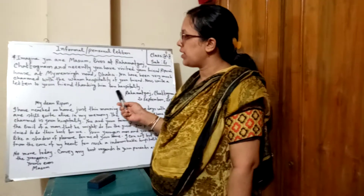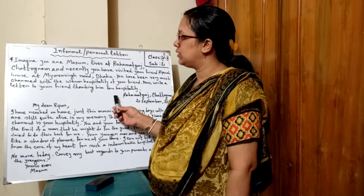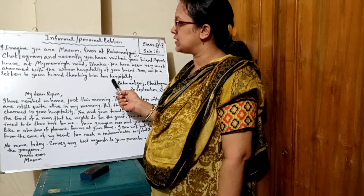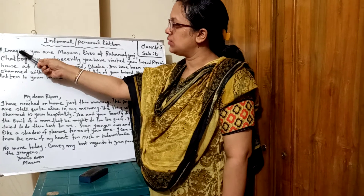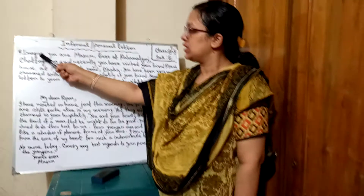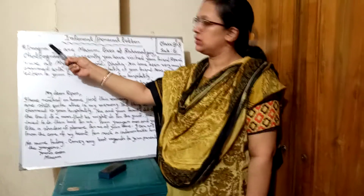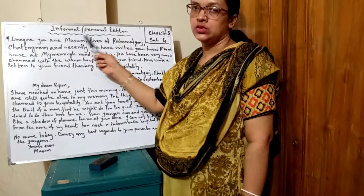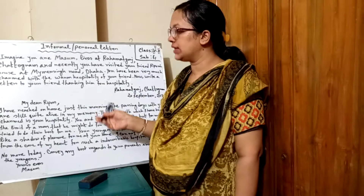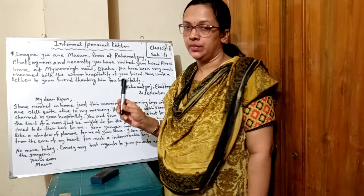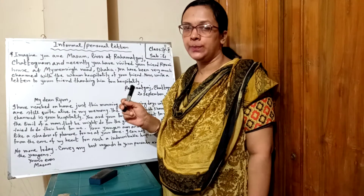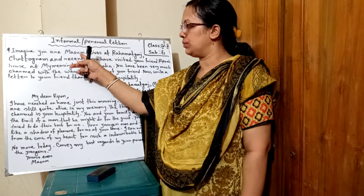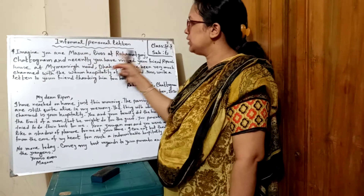Listen very carefully and look at the board. Here, the first word is 'imagine' — meaning suppose. Imagine you are Masoon. So now in the letter, you cannot write your own name. You are Masoon. You have to write the name in the replacement of your name: Masoon, Lipset, Ramadganj, Chattagram.